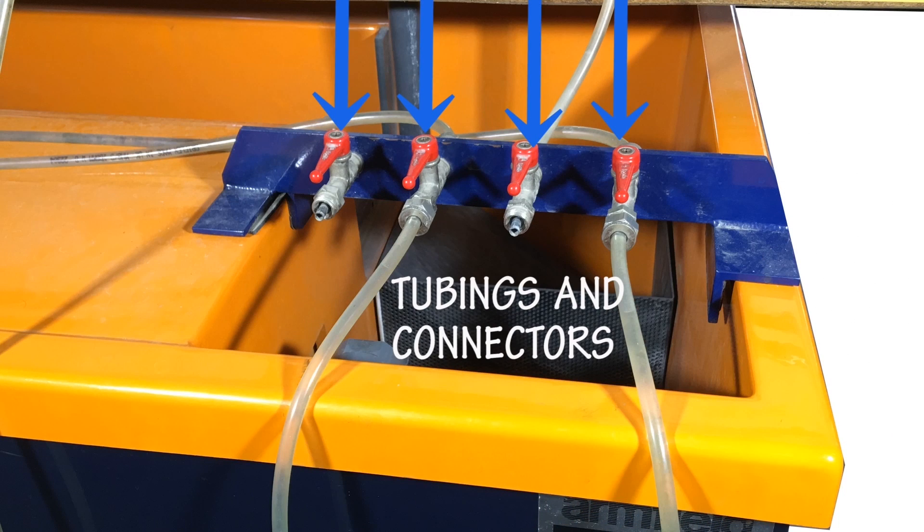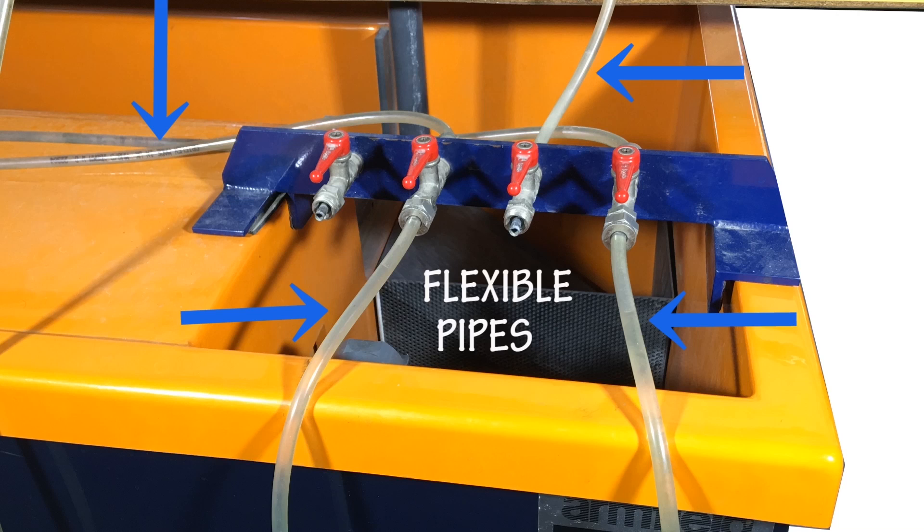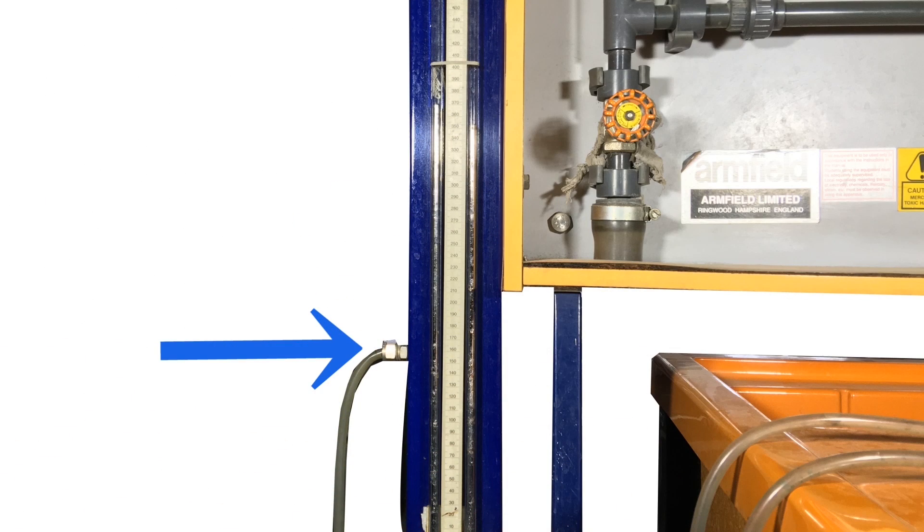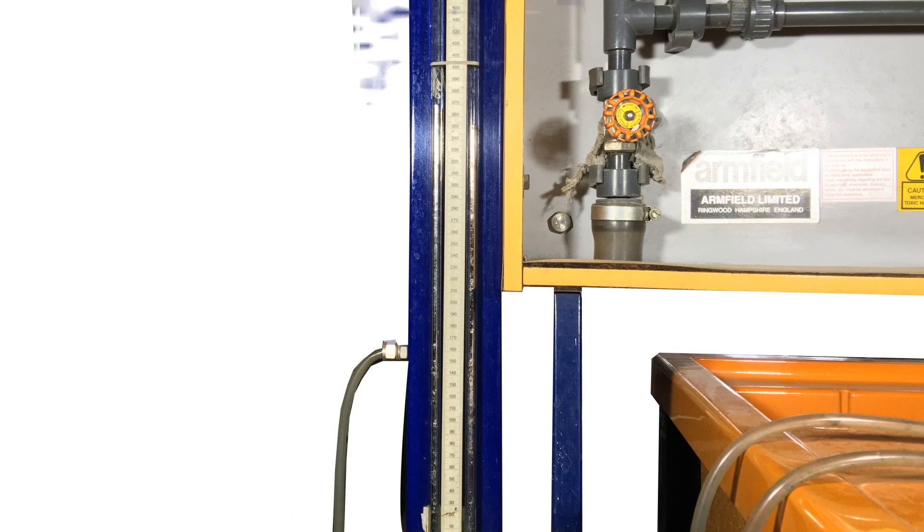Then we have these tubing and connectors. The flexible pipes are connected to these. The second outlet control valve through which the water flows out of this system. One of those flexible pipes is connected to this mercury head loss scale. The difference between the two heads gives us the mercury head loss.